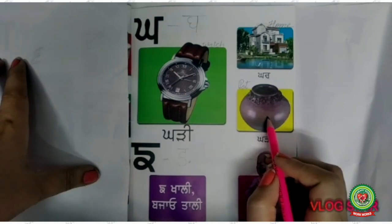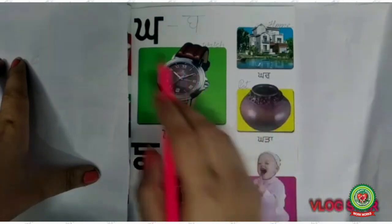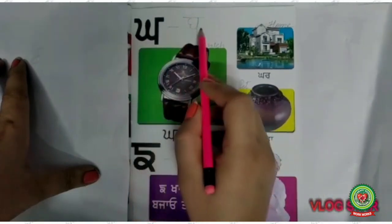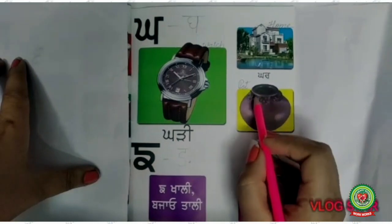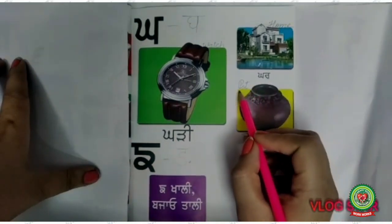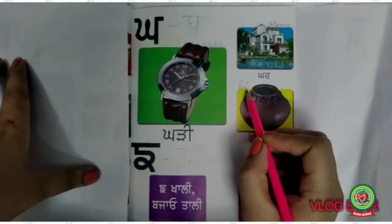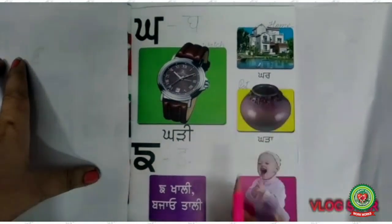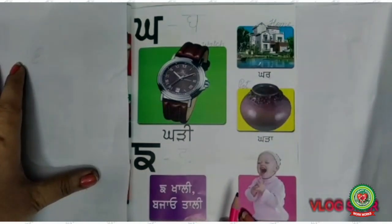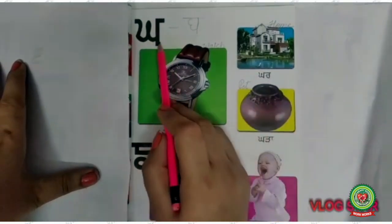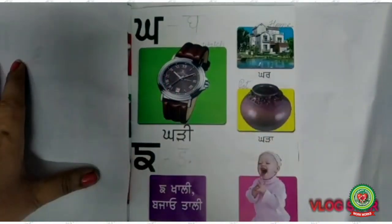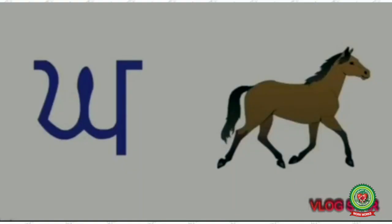Now come to the next picture and start reading: kagga gha — 'kada.' Kada means pot. Write down 'pot': P-O-T. Now we have learnt kagga and its words.